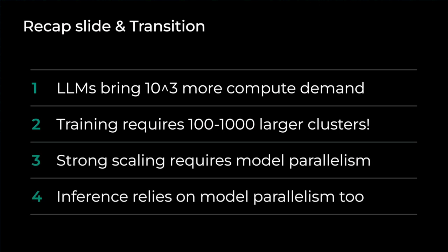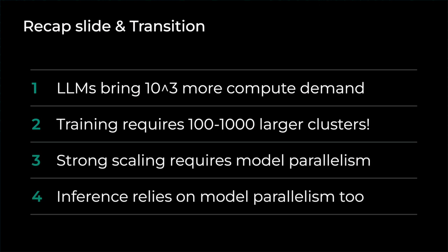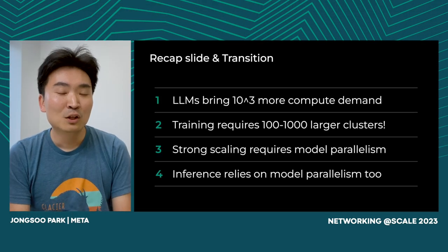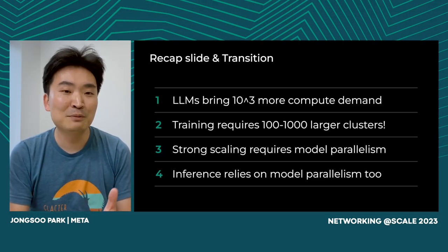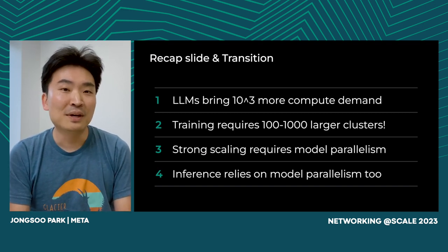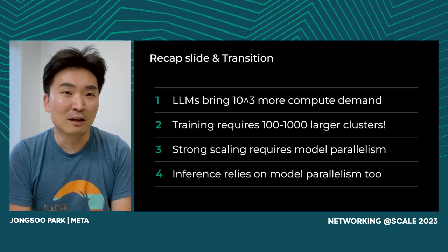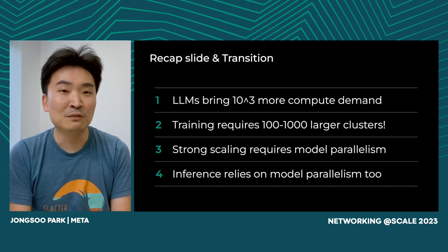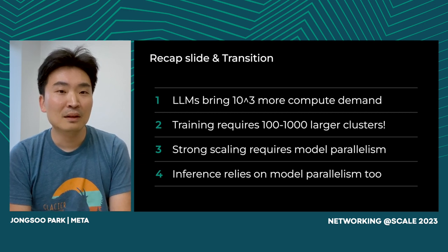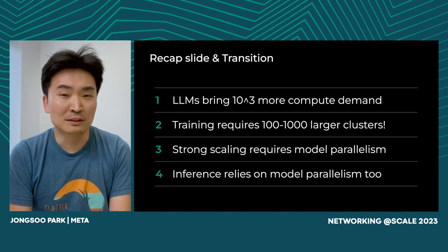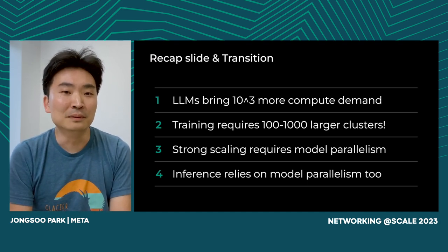To recap the first part: LLMs require orders of magnitude more compute compared to recommendation models. Training in particular requires tens of thousands of accelerators to finish in a reasonable time. Because of that, we need to use different types of parallelization, which generates diverse communication patterns — a very interesting problem for network design. Inference also requires a small cluster, making it a network problem too. Now Peter will talk in more depth about system design for LLM training and inference.